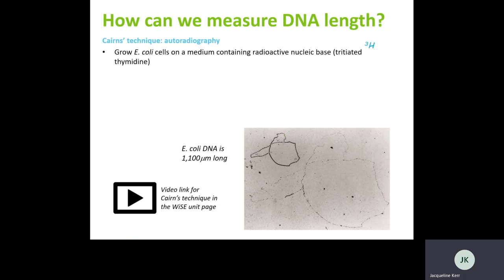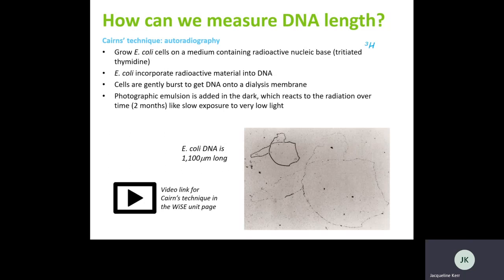So Cairns took these bacteria, grew them on a medium, food source if you like, and it contained nucleic bases in it already so that the E. coli could incorporate them. So that was the next step then. After growing them for a while, the E. coli had taken this radioactive material into their DNA, so it meant that the hydrogen would only be in the DNA and no other part of the E. coli cells. Taking the cells in, you can burst them gently and put them onto dialysis membrane to be able to spread them out and then keep them stationary.